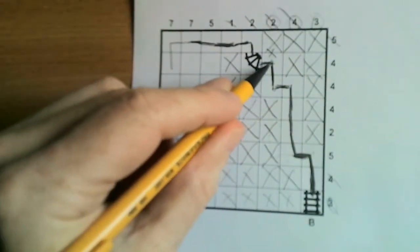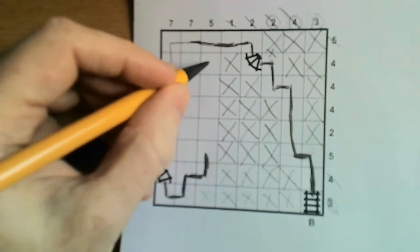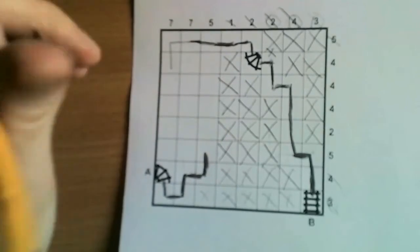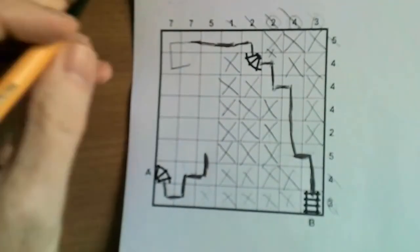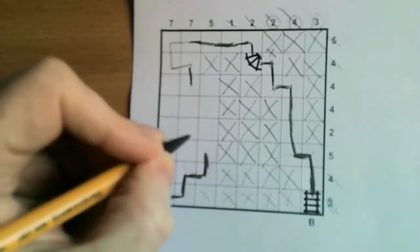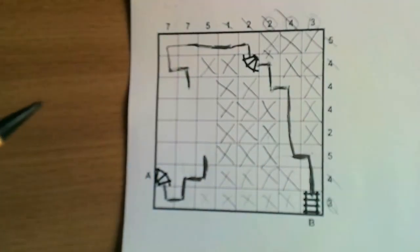So one, two, three. So we still have a fourth square here. So again we can't be coming in like this because that will give us five. Therefore this must move across like that. That gives us our four. And then we come down.